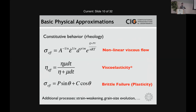If you want to include elastic effects, you might modify your viscosity to include viscoelasticity — though note that including viscoelasticity actually requires modifying your governing equations. Then we introduce brittle deformation with a yield criterion. We compute an effective yield stress using the Drucker-Prager form, where the yield stress depends on the pressure, the coefficient of friction, and the cohesion. If the viscous stress exceeds the yield stress, we reduce the viscosity back down onto the yield plane.